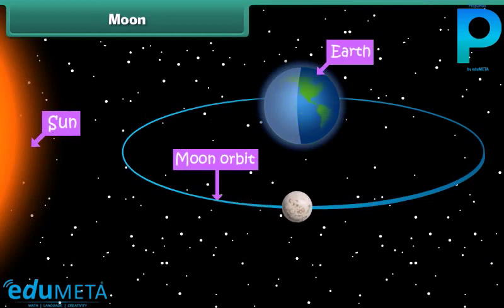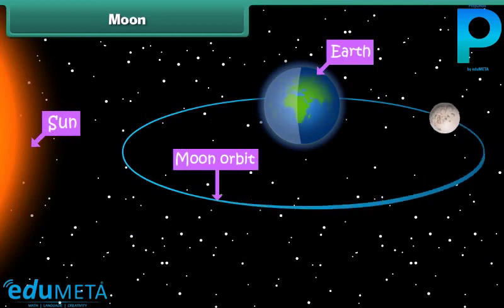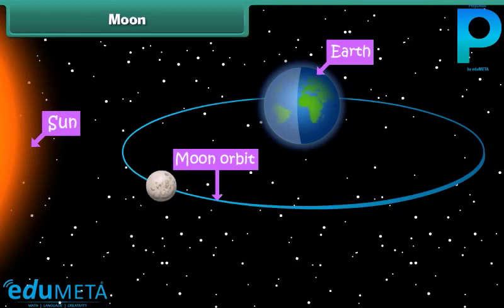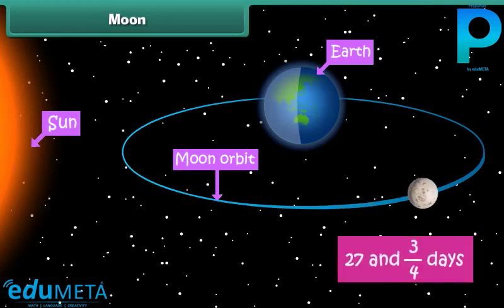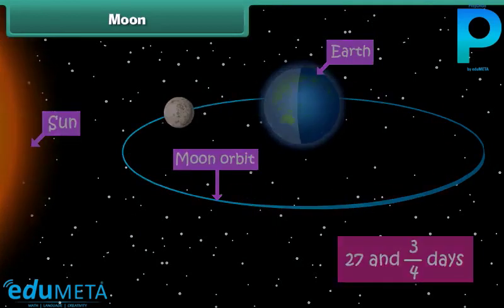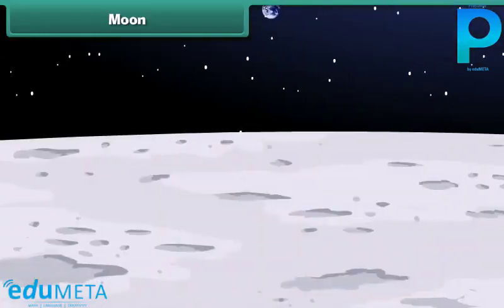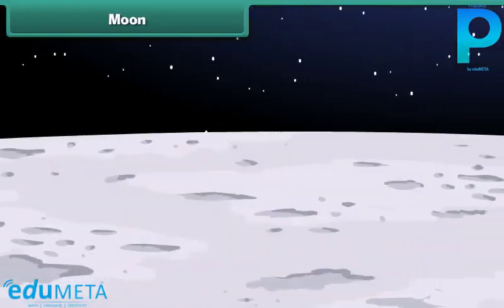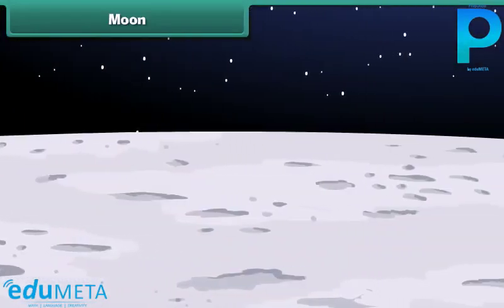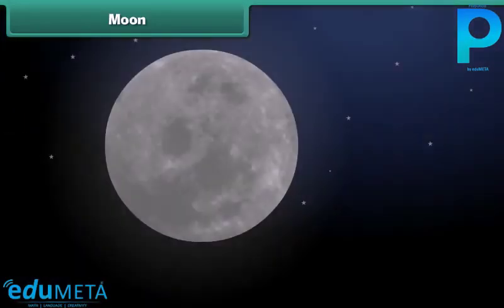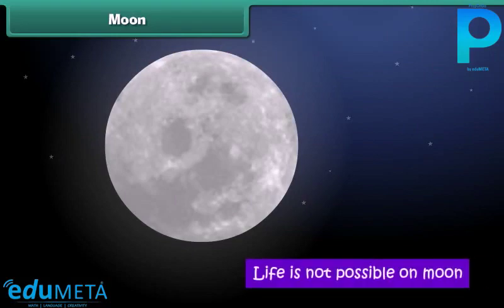The Moon is the natural satellite of Earth that revolves around it. It completes one revolution in 27 and 3/4 days. Unlike our Earth, there is no air or water on the Moon. Therefore, life is not possible on the Moon.